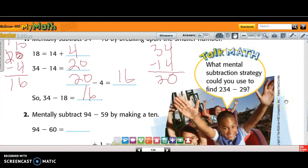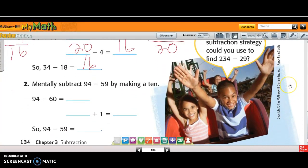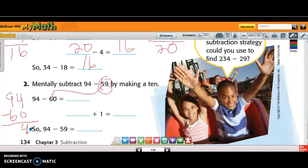Now it says mentally subtract 94 minus 59 by making a 10. So which one of those could I make a 10, 94 or 59? Which one ends in a 9? 59. So I'm going to add 1 to 59. But if I add 1 to 59, I get 60. Now I can subtract 94 minus 60. 4 minus 0 is 4, and 9 minus 6 is 3. So this is 34.